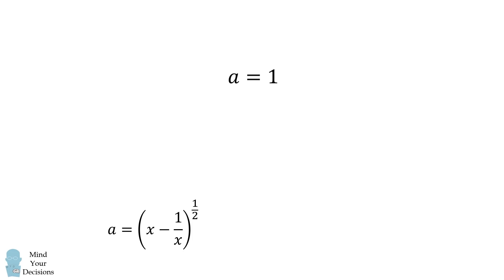We then recall that a is equal to the quantity x minus 1 over x raised to the power of 1 half. We can then solve this equation for x. We square both sides of the equation and then multiply both sides by x.